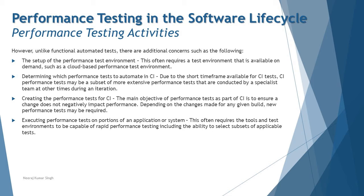However, unlike functional automated tests, there are additional concerns when it comes to performance testing in CI. One concern is the setup of the performance test environment — when and where it will take place. This often requires a test environment that is available on demand, such as a cloud-based performance test environment, readily available before execution begins. Another concern is determining which performance tests to automate in CI — due to time frame constraints, CI performance tests may be a subset of more extensive performance tests conducted by a specialist team.